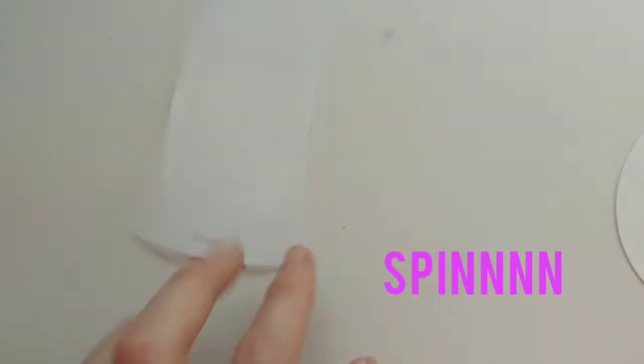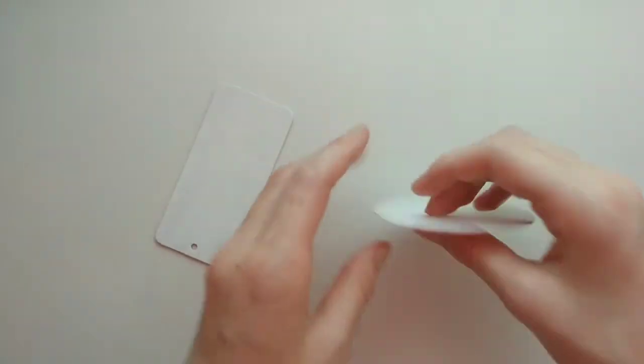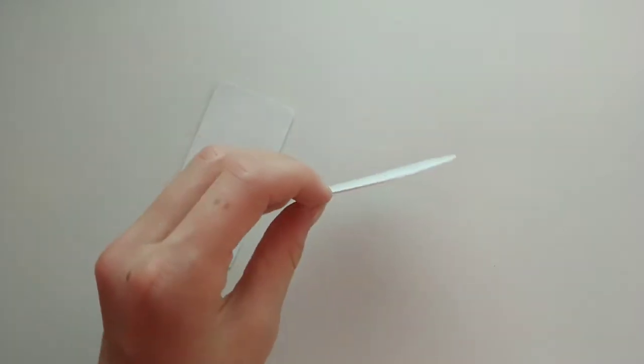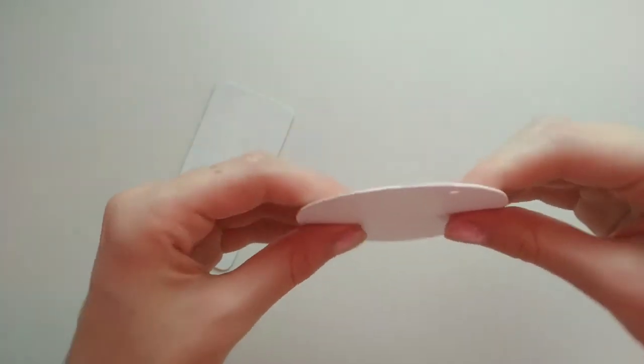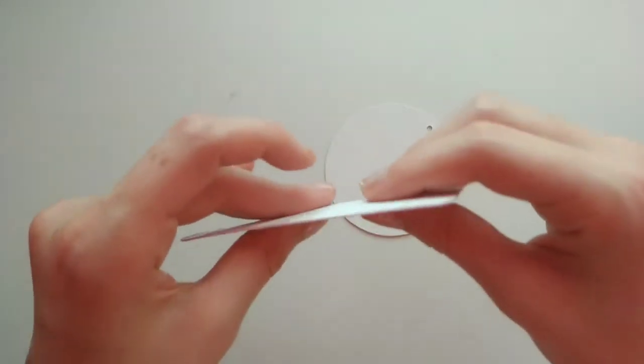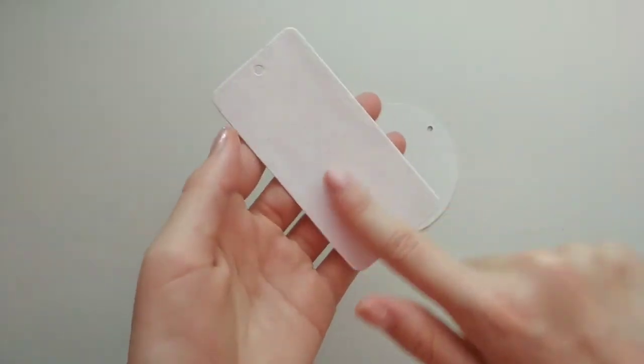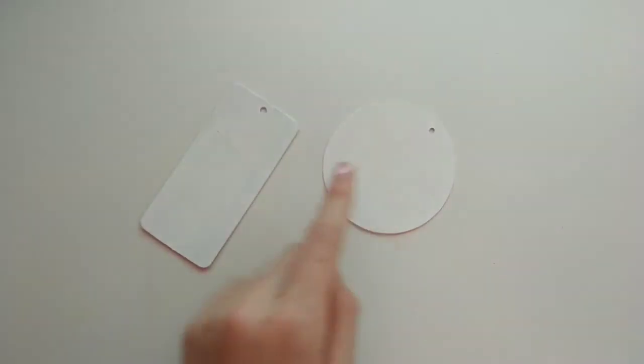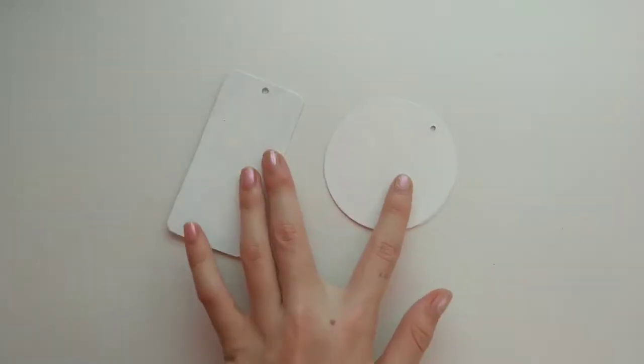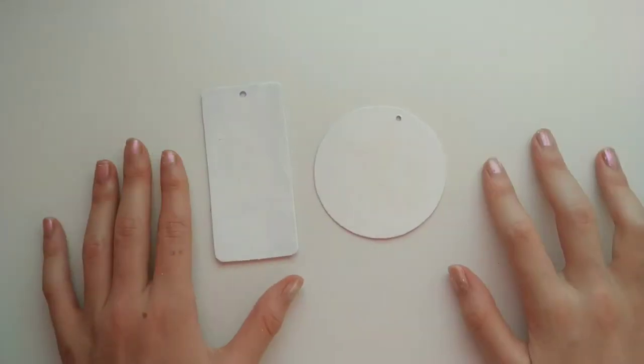Okay, but now back to where we were. I have a circle and a rectangle, and both of these are pretty thick tags. Some tags are very flimsy, but these were very stiff. This one was more cardboard-y and this one was more plastic, but they're both great for painting on. Let's actually start painting now.